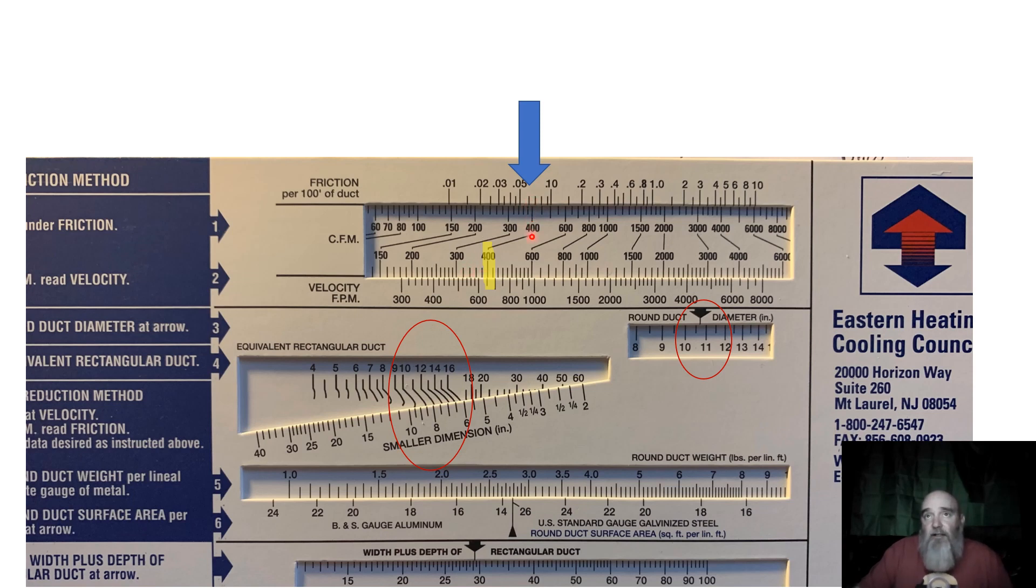This right here is a duct slide. I have it set at 0.066, and I have it over 400 CFM. That's 400 CFM with reference to my friction rate of 0.066.